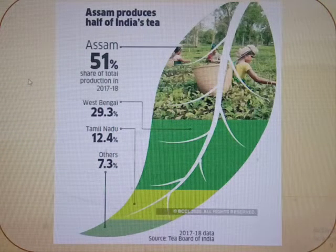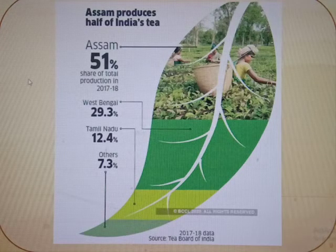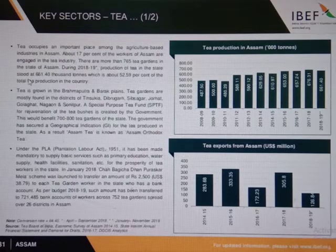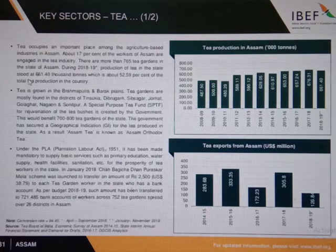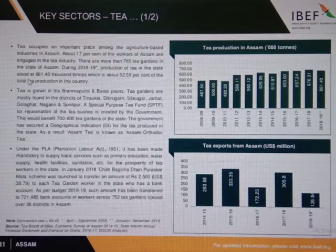Assam produces half of India's tea and shares 51% of total production in India. Tea occupies an important place among the agriculture-based industries in Assam. About 70% of the workers of Assam are from the tea industry. There are more than 765 tea gardens in the state of Assam.